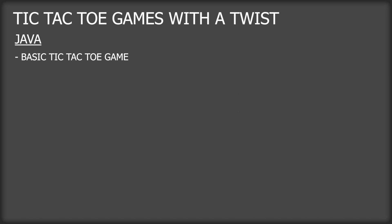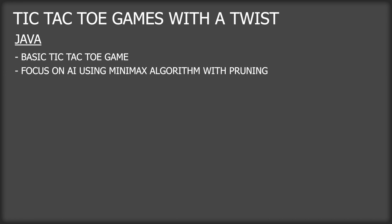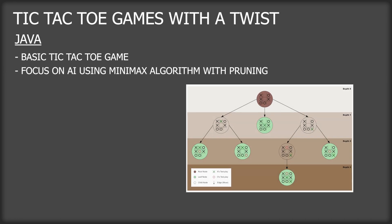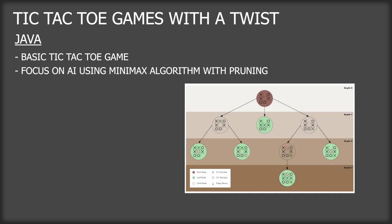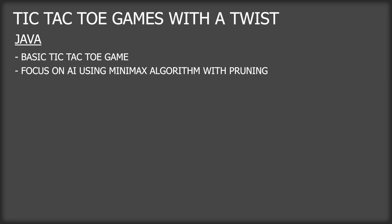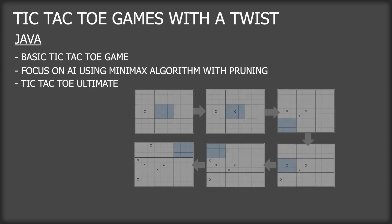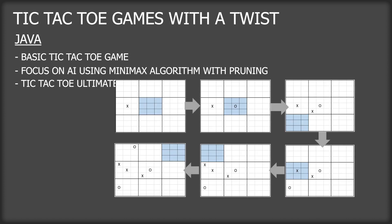Then we will focus on the AI, and we will use the Minimax algorithm and some pruning to get the most out of our basic tic-tac-toe game. As the final episode for our Java part, we will create tic-tac-toe Ultimate — a fun twist to tic-tac-toe which requires a whole new strategy to play.